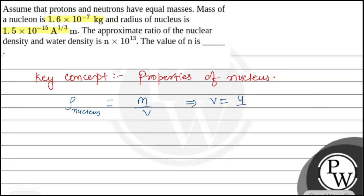Volume of nucleus is (4/3)πr³. The radius r is given as 1.5×10⁻¹⁵ × A^(1/3) meters, so we substitute r = 1.5×10⁻¹⁵ × A^(1/3) into the volume formula.